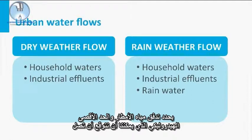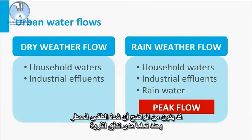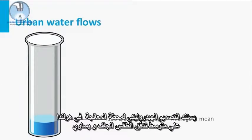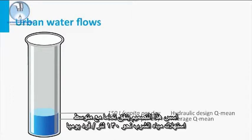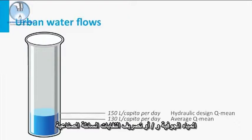The flow during rainy weather is called the rain weather flow, or RWF. The rain weather flow determines the maximum hydraulic load that we can expect to reach the STP, and we therefore call this flow also the peak flow. The hydraulic design for an STP in the Netherlands is based on a mean dry weather flow of 150 liter per capita per day, or 6.25 liter per capita per hour. This agrees well with the average drinking water consumption of about 130 liter per capita per day, with a small difference of 20 liters attributed to additional drained groundwater and industrial effluent discharges.